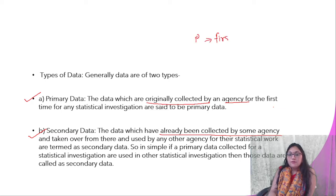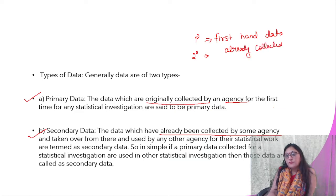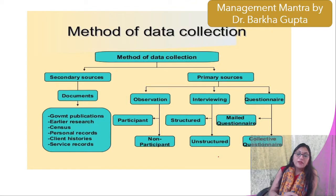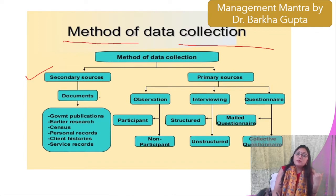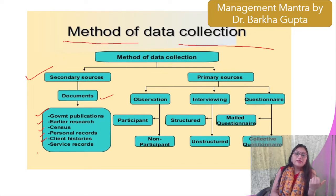So, primary data is first-hand data, and secondary data is already collected data. For statistical investigations where you need primary data, there are several methods for collecting it. Secondary sources are those already available — such as government publications, prior research, census records, personal records, stories or records of clients, books, magazines, internet, websites, published journals, and newspapers.